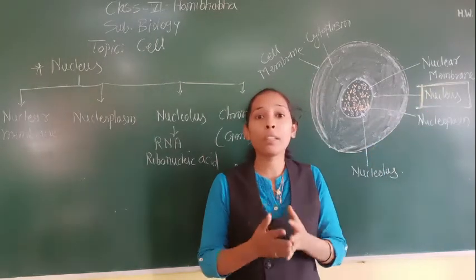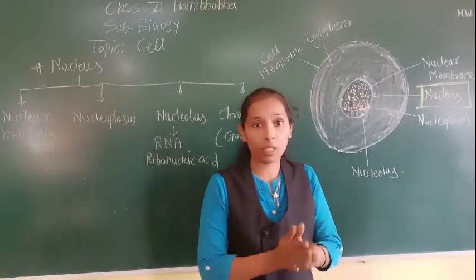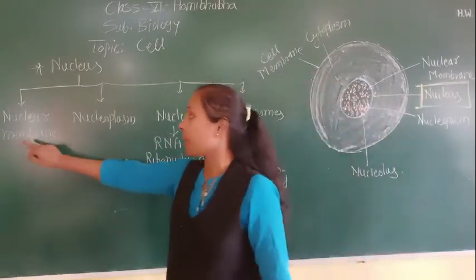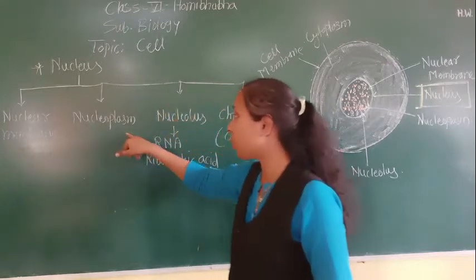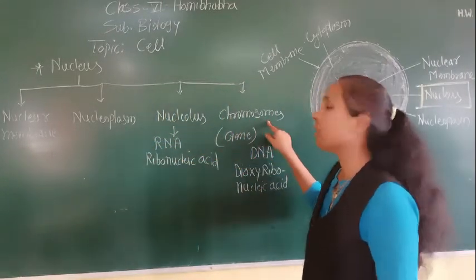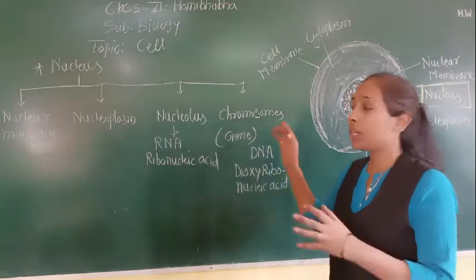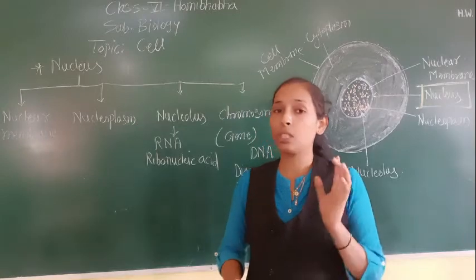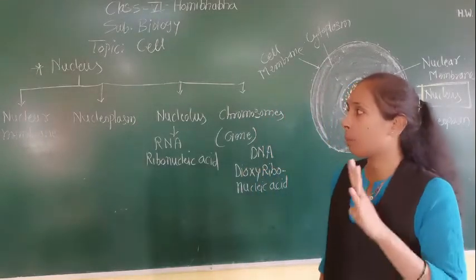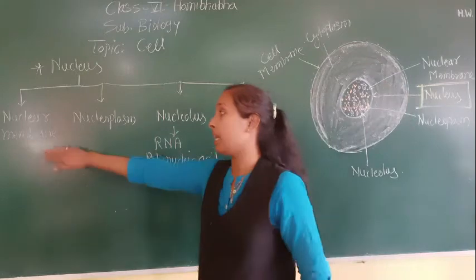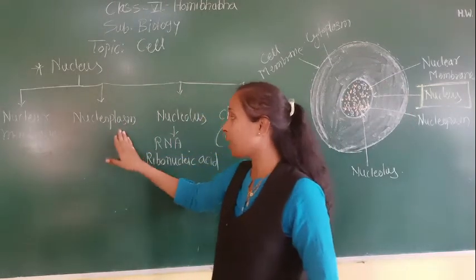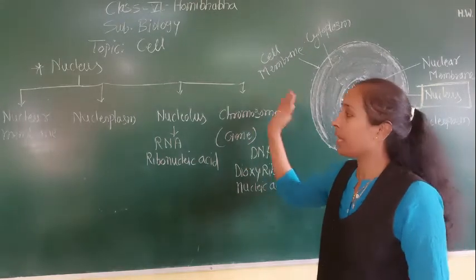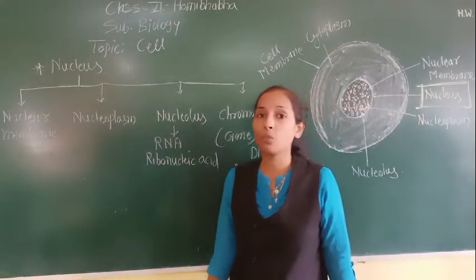There are certain other parts of the nucleus. The nucleus mainly consists of four parts: nuclear membrane, nucleoplasm, nucleolus, and chromosomes. Let's discuss all these four parts one by one.